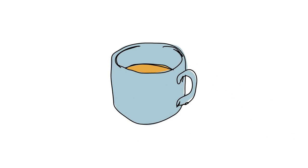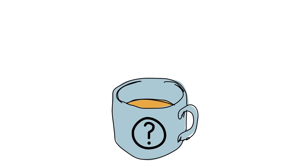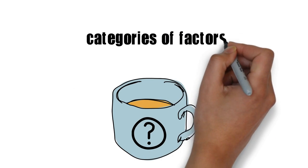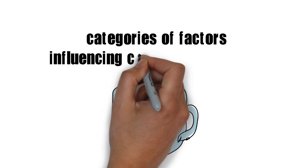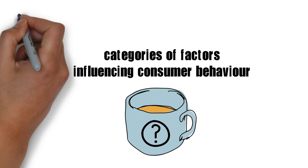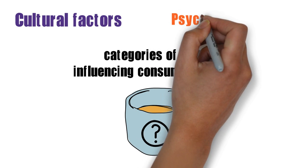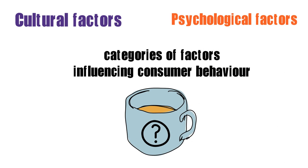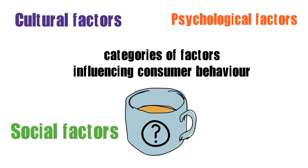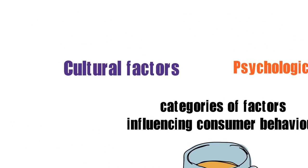Ever wondered why you or people around you drink coffee every morning? Choices and behavior related to consumption and purchasing are influenced by a large number of factors. We can classify these factors in four broad categories: cultural factors, psychological factors, social factors, and personal factors. Let's go through them one by one and see what they can tell us about our behavior as consumers.